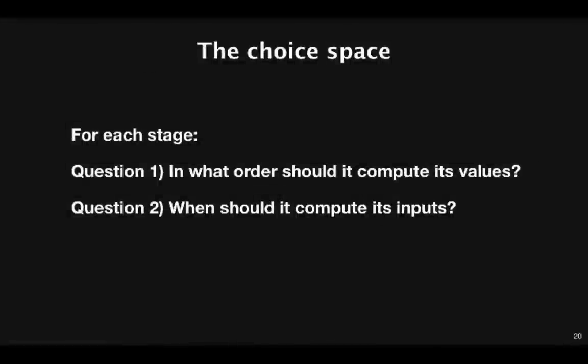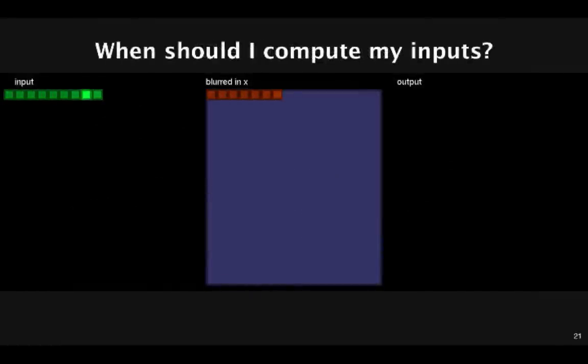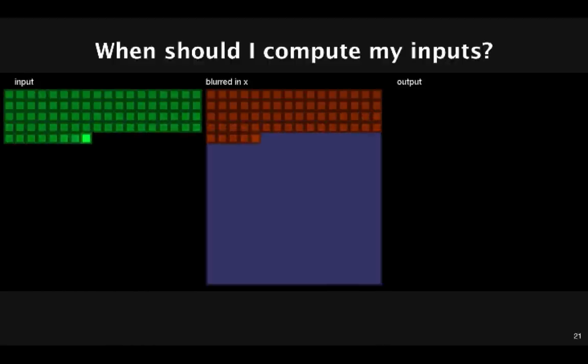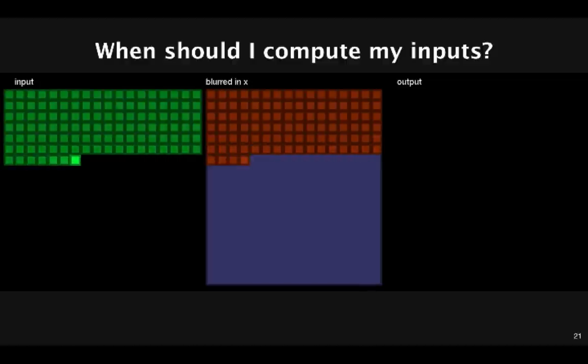The second question is more subtle. When should each stage compute its inputs? Here we have a visualization of the blur pipeline. On the left is the input, on the right is the output, and in the middle is the blur in x stage. Green means we're reading, red means we're writing, and blue means we've allocated a temporary buffer. So right now we're reading from the input and using it to write to the blur in x stage. We read three values from the input to compute a single value of the blur in x stage.